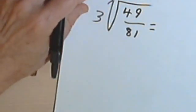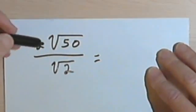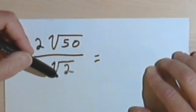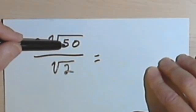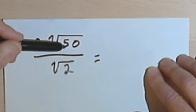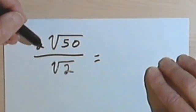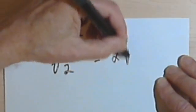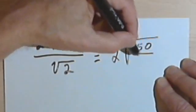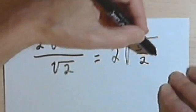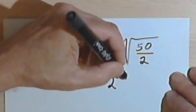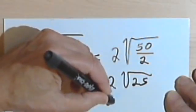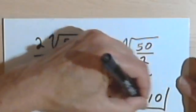Here are a couple of slightly more complicated problems, just to make sure we remember some of the other rules we have. Here we have 2 times the square root of 50 over the square root of 2. If I divide 50 by 2, that gives me 25, and 25 is a perfect square. The 2 out front is just going to multiply the whole thing, so I can turn this into 2 times the square root of 50 over 2, which simplifies to 2 times the square root of 25, giving me 2 times 5, which equals 10.